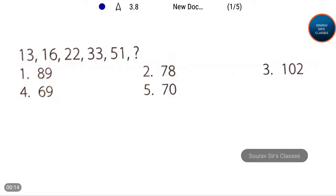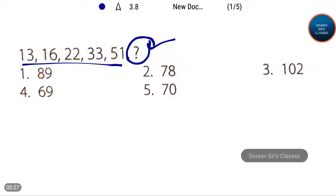Our first question: a series is given and the last term of this series is missing. We have to find out this last term. The series is 13, 16, 22, 33, 51, and let's denote this missing term as x. Five options are given and we have to choose the correct one. So let's solve this.